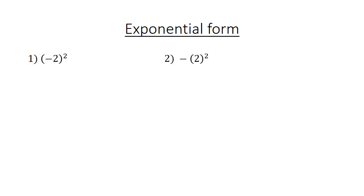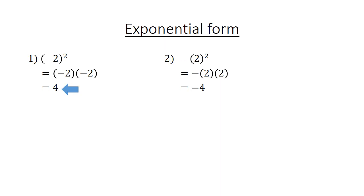Exponential form. Example 1: negative 2 in brackets to the power of 2 — the number 2 is negative, giving negative 2 times negative 2. Example 2: positive 2 to the power of 2, giving positive 2 times positive 2. Both equal negative 4 and negative 4 respectively.